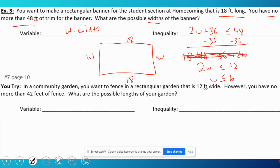In a community garden, you want to fence in a rectangular garden that's 12 feet wide. Again, a rectangle, only this time we know the width is 12. You have no more than 42 feet of fence. A lot of these problems with materials, you're going to be doing less than.